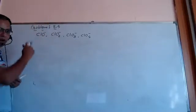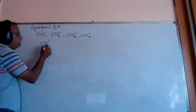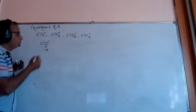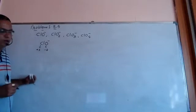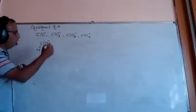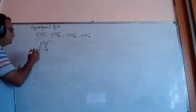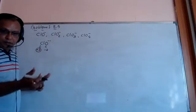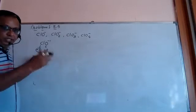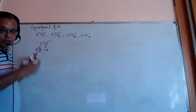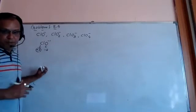For ClO⁻, the oxidation number of oxygen is minus two, so the oxidation number of chlorine is plus one. From plus one, chlorine can be oxidized to plus three, plus five, or plus seven. It can also be reduced to minus one or zero. Therefore, ClO⁻ can undergo disproportionation.